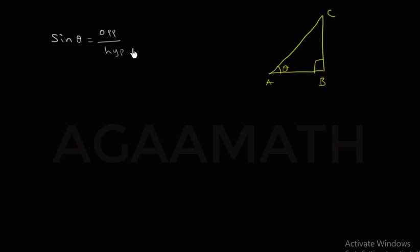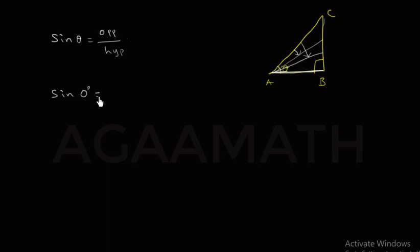As the angle theta decreases slowly, the length of BC (the opposite side) gets smaller and smaller. When it comes to 0 degrees, the hypotenuse lies on AB itself. The opposite side gets lesser and lesser and eventually becomes 0. So sine 0 = 0 divided by hypotenuse, which is 0.